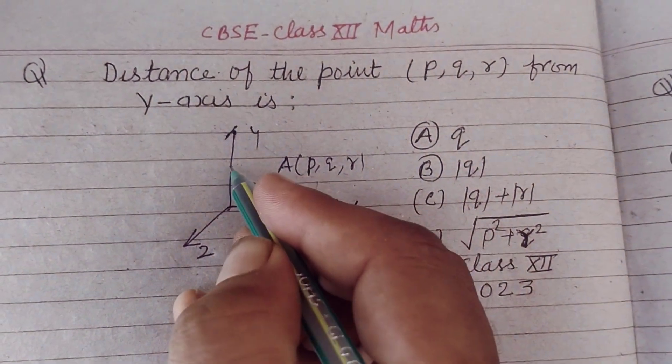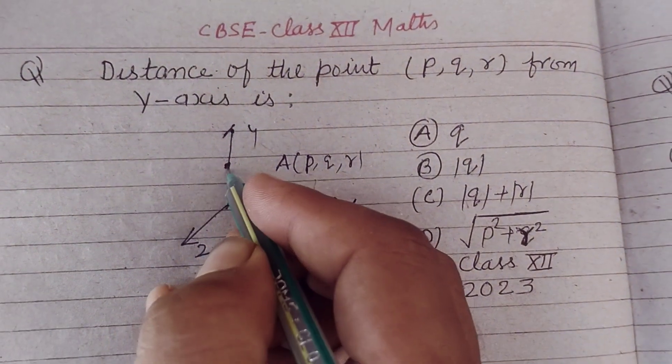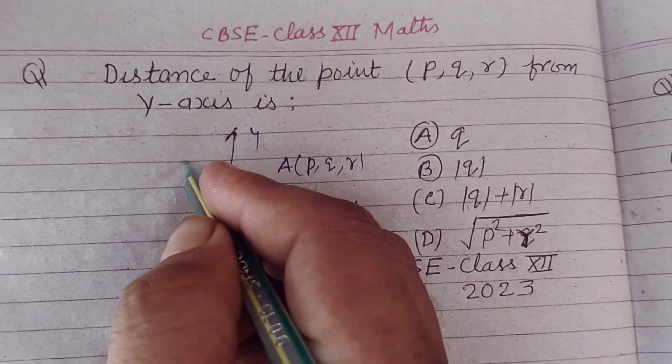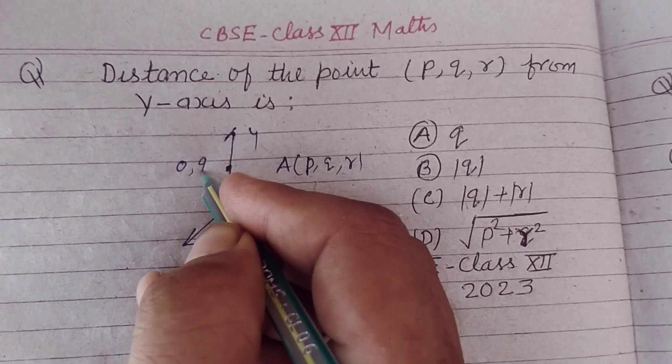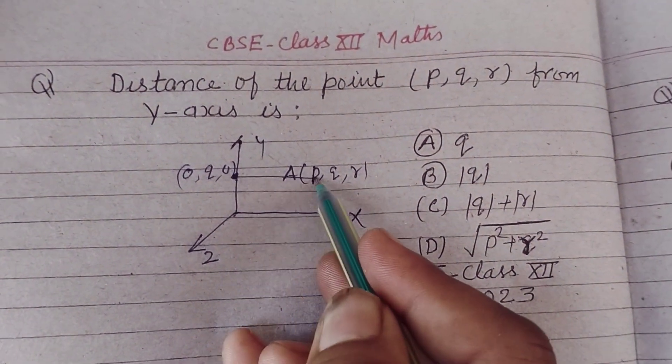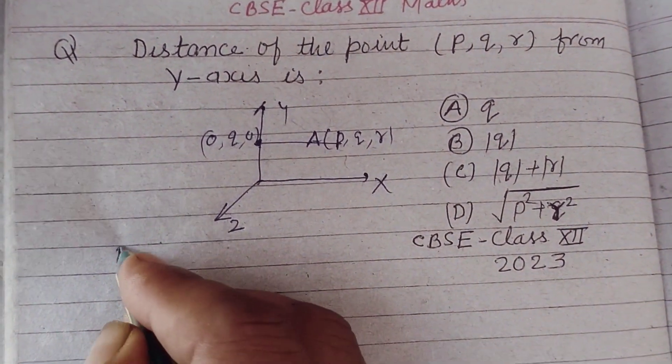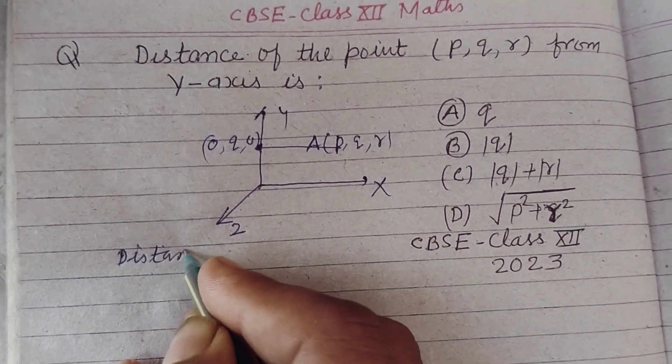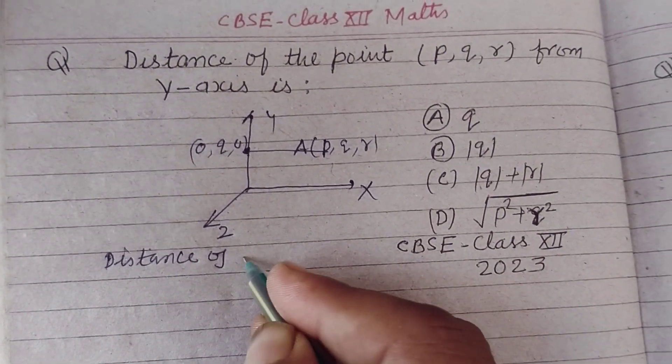Another point at y-axis will be (0,Q,0). So the distance of this point from y-axis, the distance of the